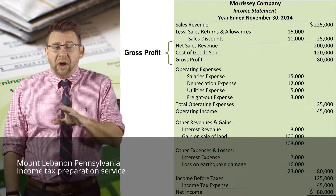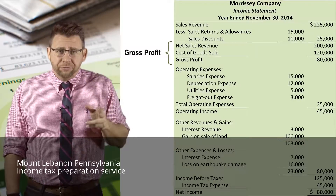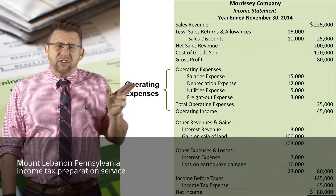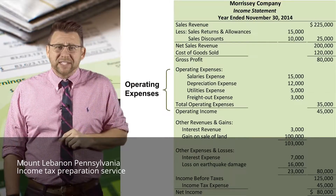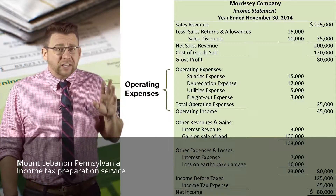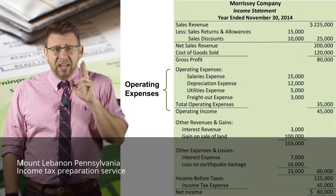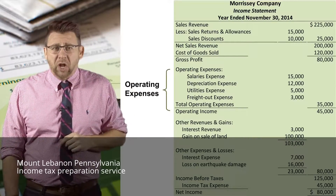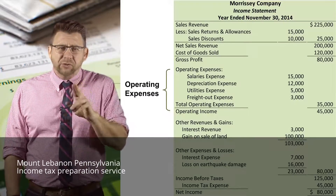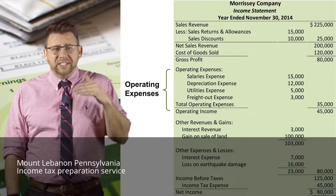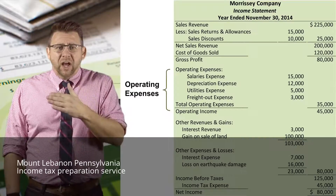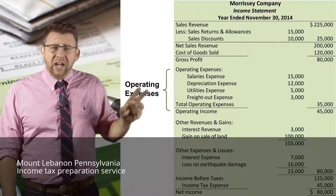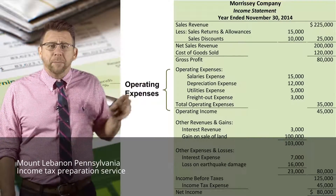Gross profit is the amount that inventory was sold for more than the cost of inventory. The next section lists all of the operating expenses of a business. Notice that not all expenses are listed here because not all expenses relate to operations. The most notable expense that doesn't belong in this section is interest expense, because interest expense relates to how a business finances its operation, not operates it. So here, operating expenses are deducted from gross profit to arrive at operating income.